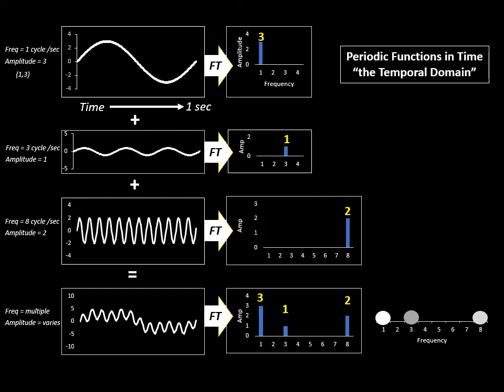We could simply represent them as dots on a single linear axis where either the size or the brightness of the dot represents the amplitude at the particular frequency.